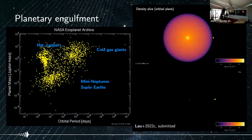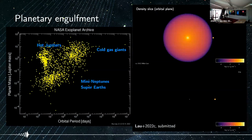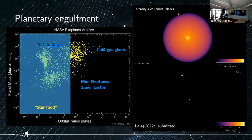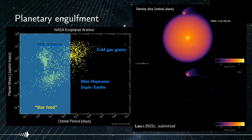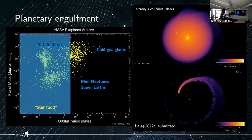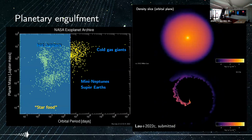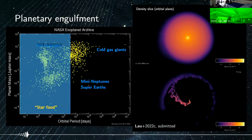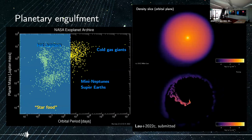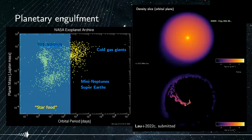More recently, I've also made simulations of planetary engulfment — a planet in-spiraling into a red giant. The key difference is that the planet is modelled as a gas sphere rather than a sink particle, which is important because the drag is mediated by ram pressure of the incident flow onto the planet, requiring us to capture the physical size of the planet.